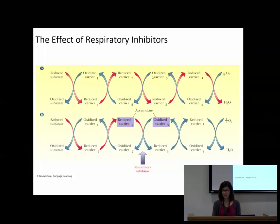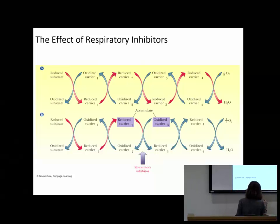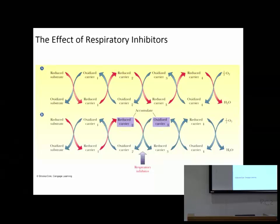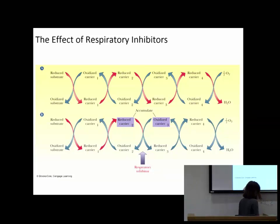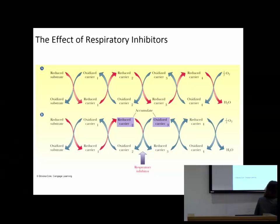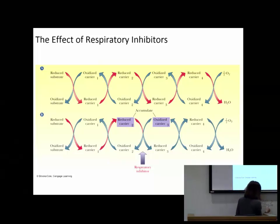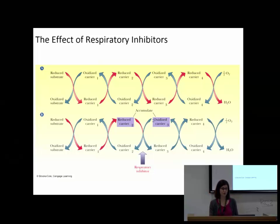The reaction is: reduced carrier two plus oxidized carrier three produces oxidized carrier two and reduced carrier three. If I stop this reaction from happening, it's like damming up a waterfall - water behind the dam starts to accumulate. So if those two carriers accumulate, we know that carrier two reacts with carrier three. That's how we found that carrier two and carrier three were associated with each other.